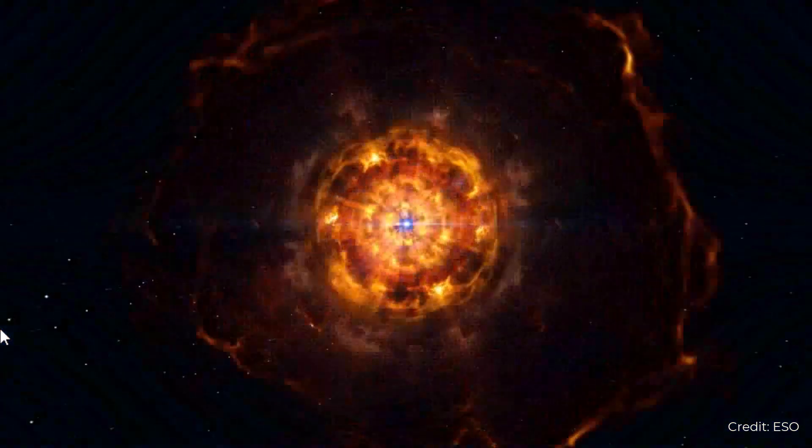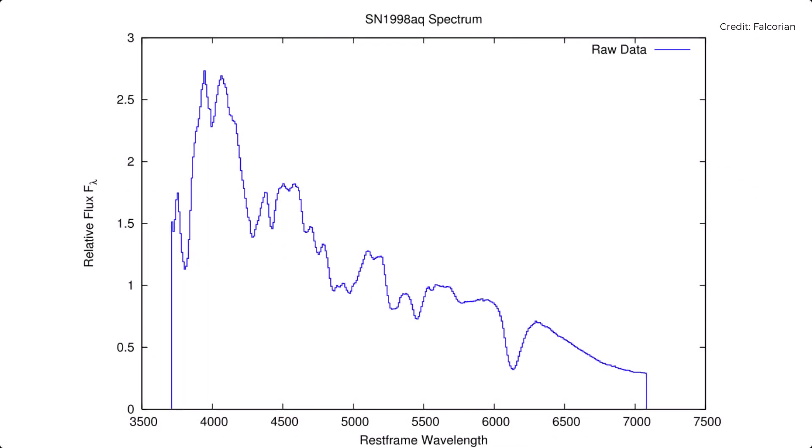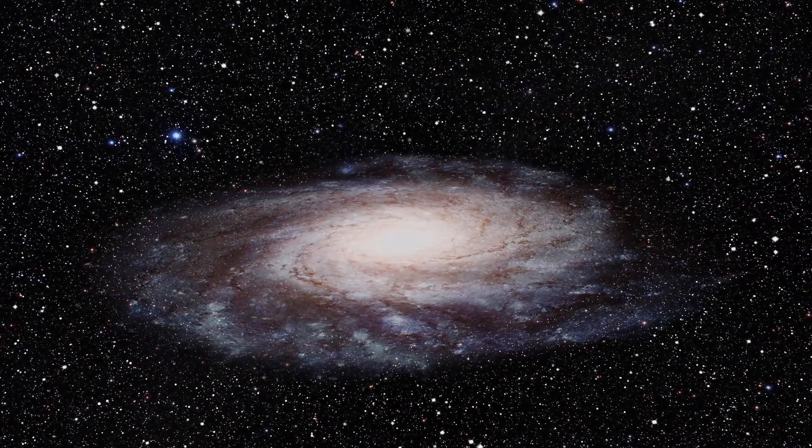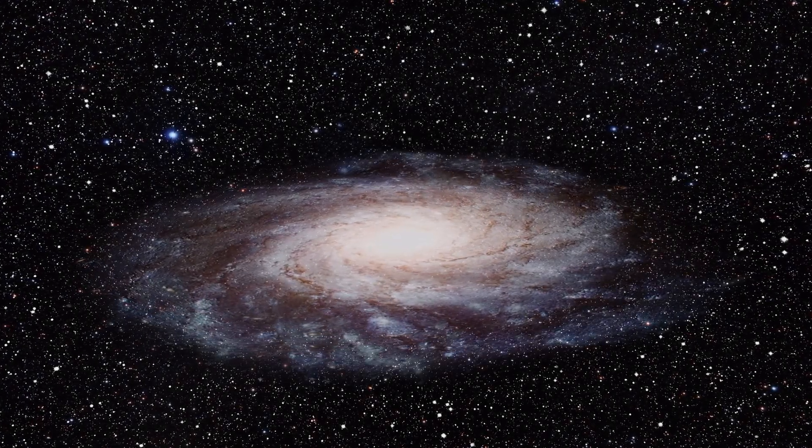This means that every Type 1a supernovae has the same peak luminosity, and so if we can determine that for one, we know it for all of them and can find the distance to any Type 1a supernovae. Remember this is the cosmic distance ladder, and so we can find star clusters which contain Type 1a supernovae and measurable Cepheid variables and use the Cepheids to find the distance to the cluster and thus the Type 1a supernovae. Then through measuring flux we can find the peak luminosity of many Type 1a supernovae and see that they do in fact have around roughly the same peak luminosity, around 10 to the 36 watts. Now whenever we see a Type 1a supernovae, we just measure its flux and we can work out its distance. Brilliant.